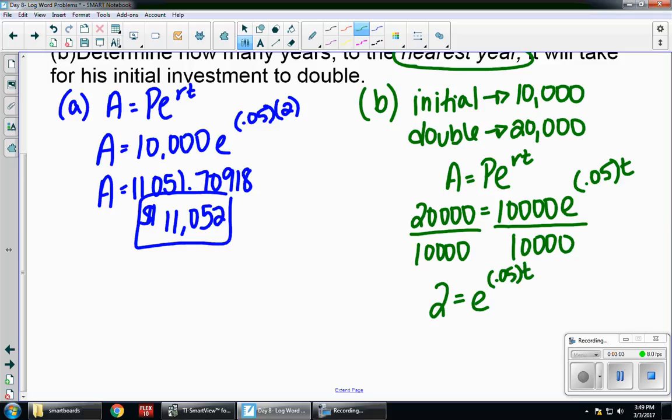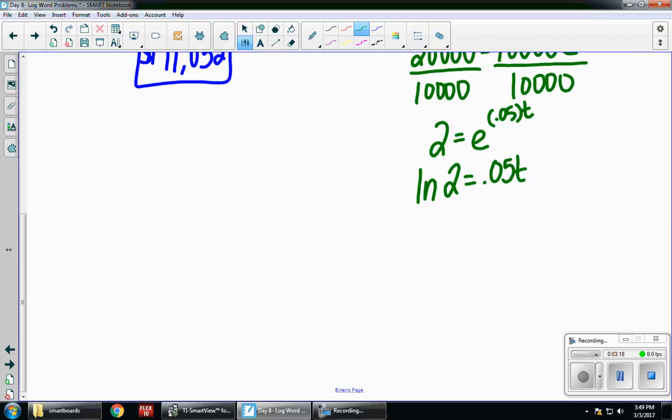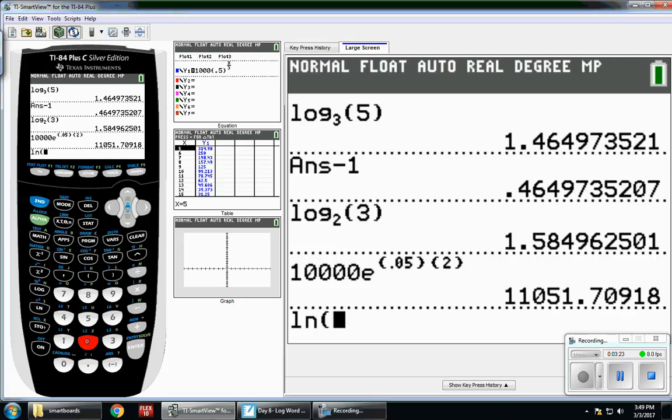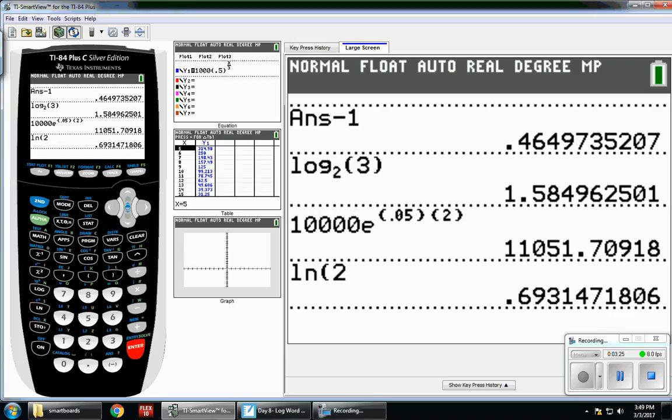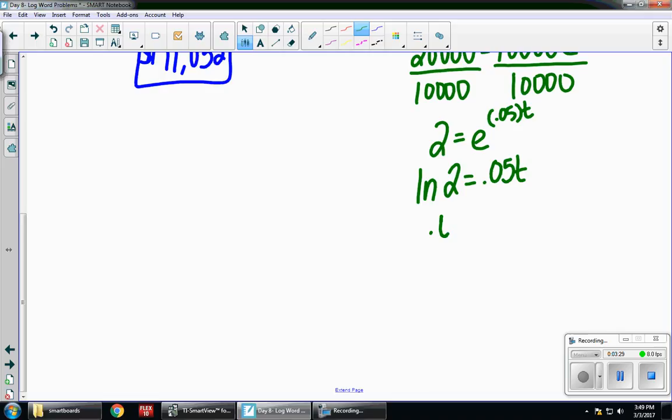Now I want to convert it to a log. So I'm going to keep the base and switch. My base is e, so I'm going to use the natural log. So the natural log of 2 is equal to 0.05T. I'm going to go to my calculator. Remember, natural log is next to the 4. So the natural log of 2, 0.69314, is equal to 0.05T.